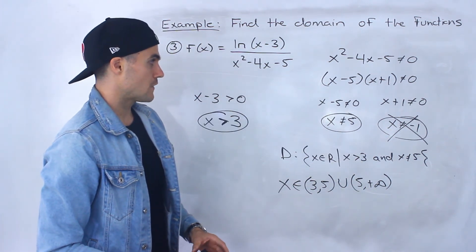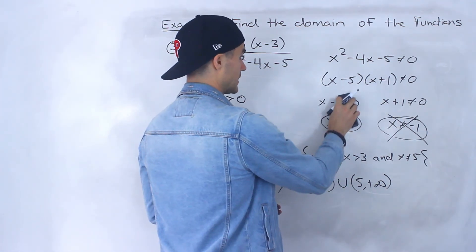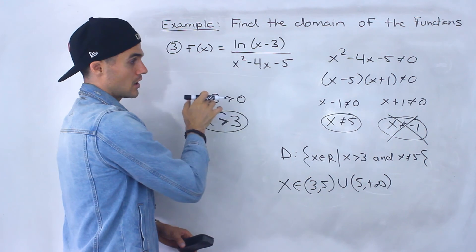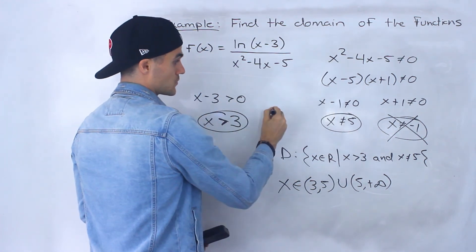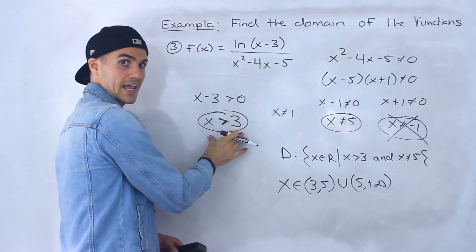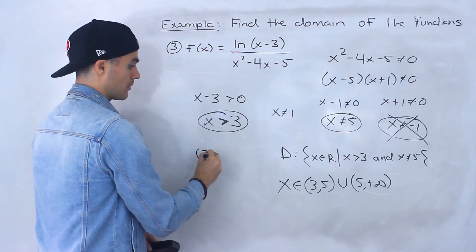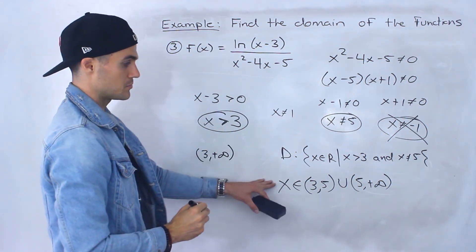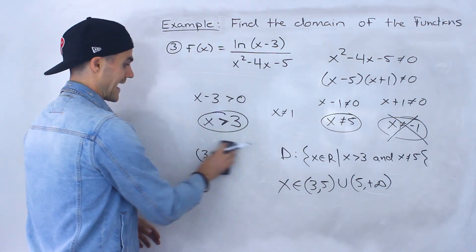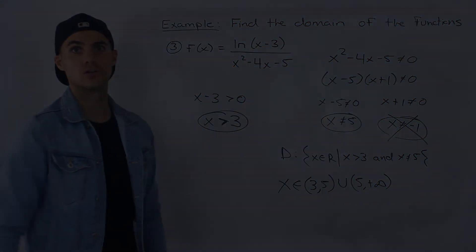What if instead we had x plus one and x minus one in the denominator, giving a different quadratic? Then x cannot equal one, and that restriction would be contained within x greater than three. So the domain would just be from three to positive infinity with no break — we wouldn't have to worry about those restrictions. But because we have x cannot equal five, and five is greater than three, we do have to include that break when writing the final domain.